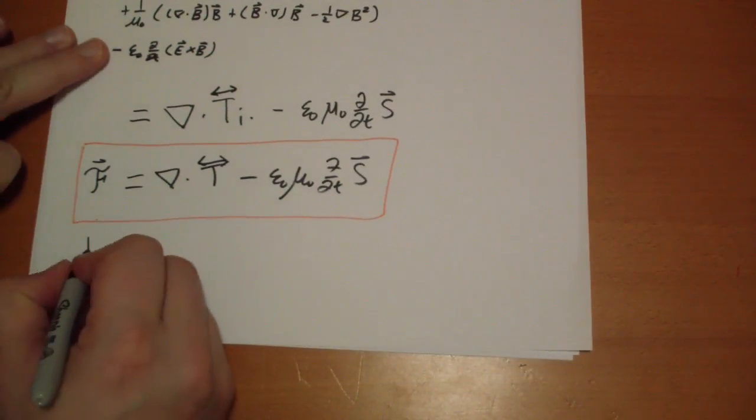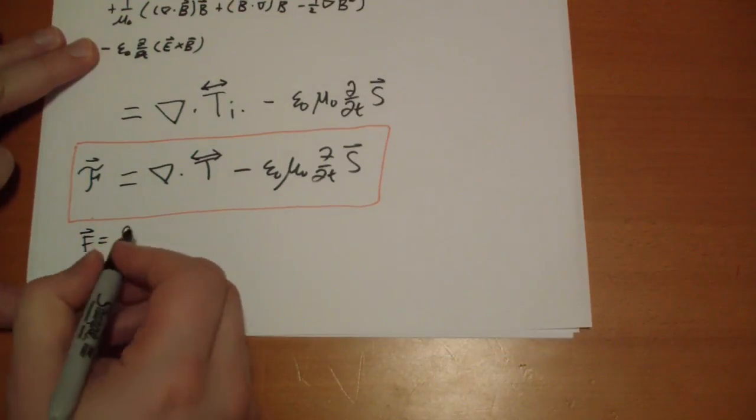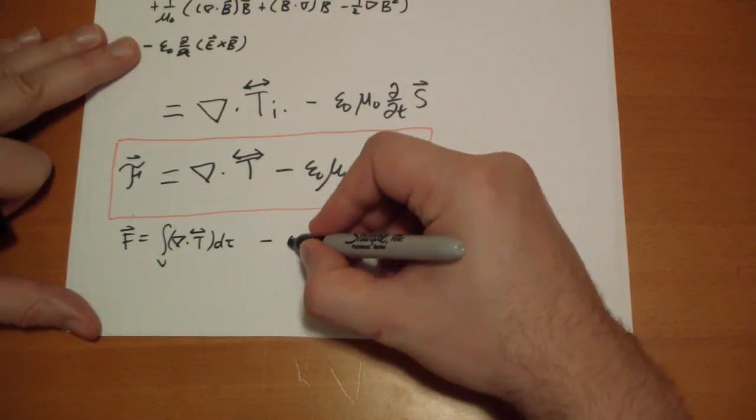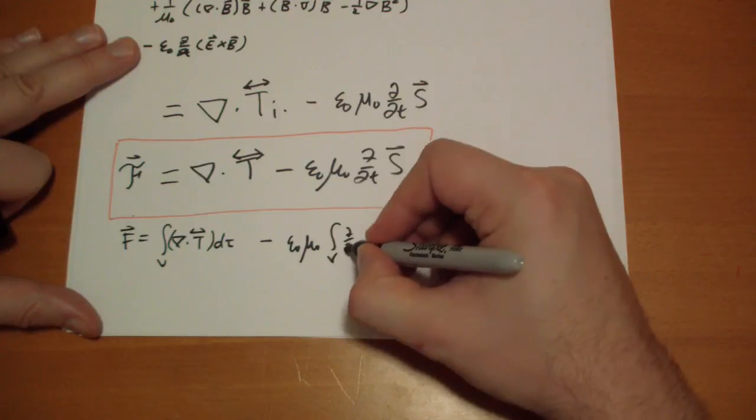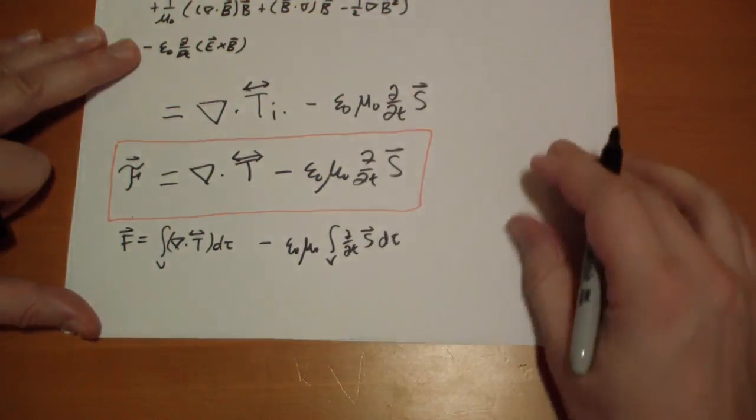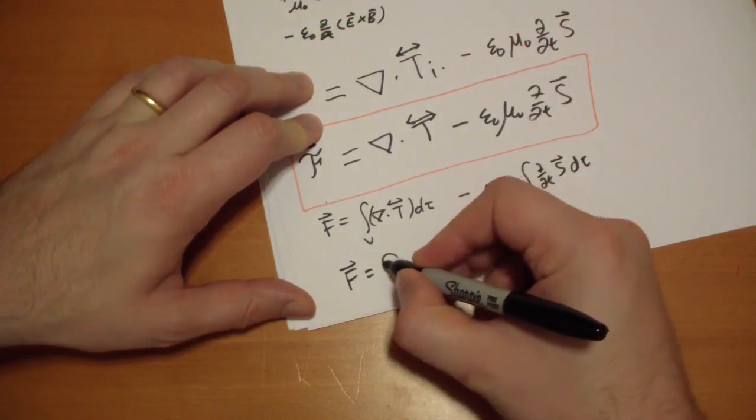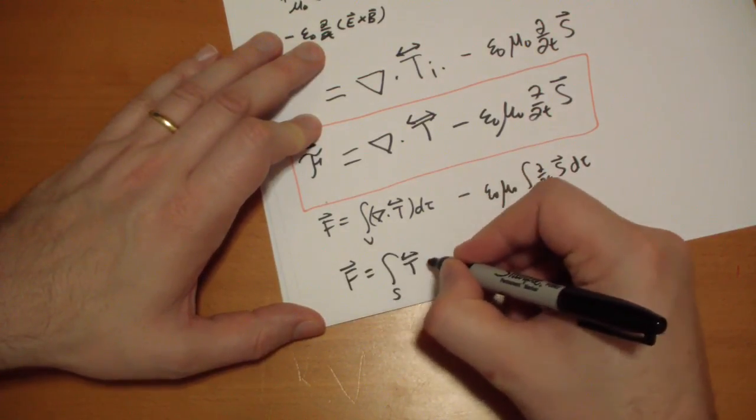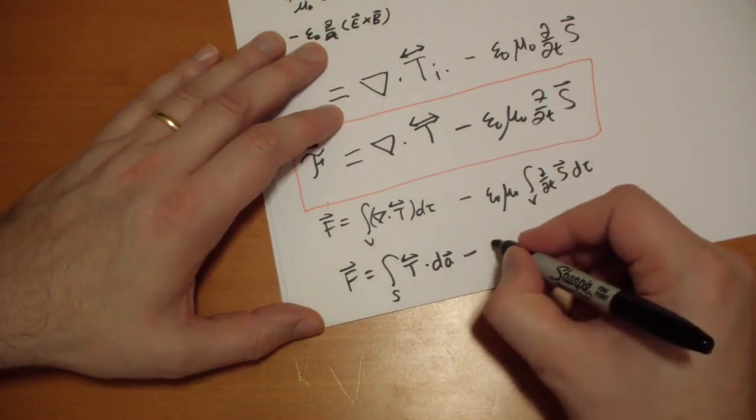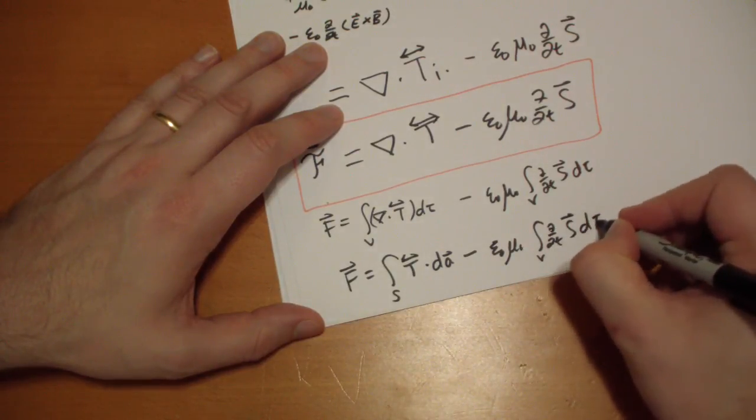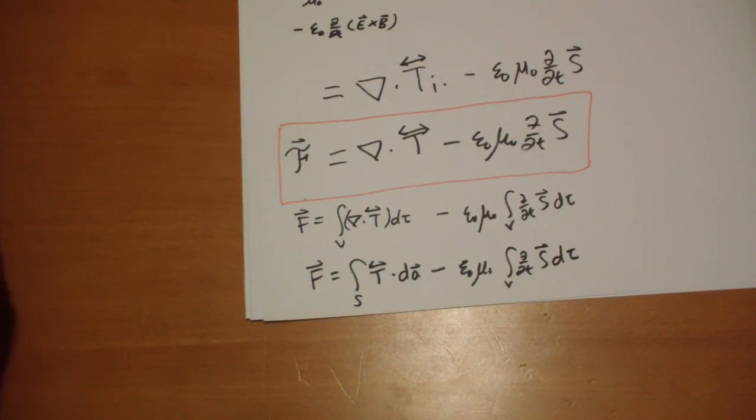And one final thing before I wrap it up. Let's calculate the total force. So the total force is the volume integral of this dF dτ. Let's apply the divergence theorem. So the force is equal to the surface integral of the Maxwell stress tensor dot dA vector, minus epsilon mu naught d by dt of the integral. There we go, there is the Lorentz force equation with simplifications made possible thanks to Maxwell's equations.